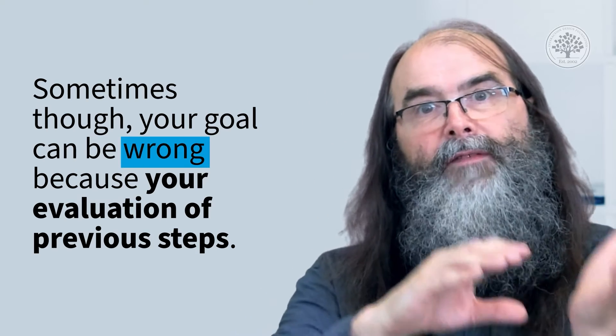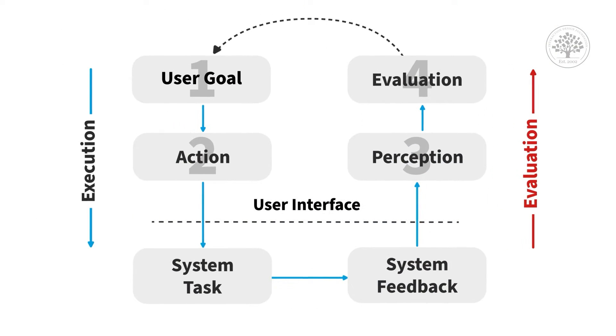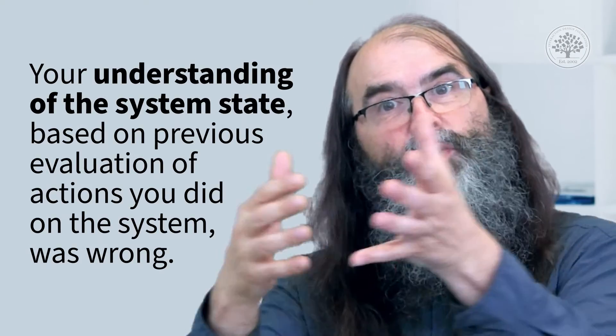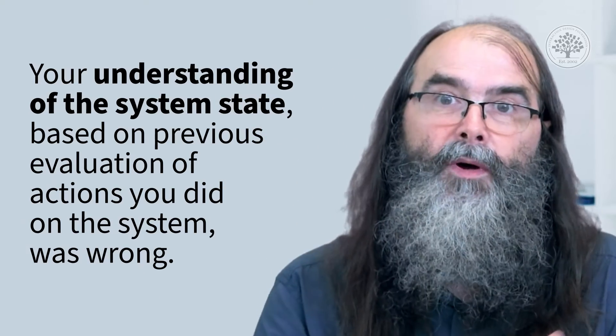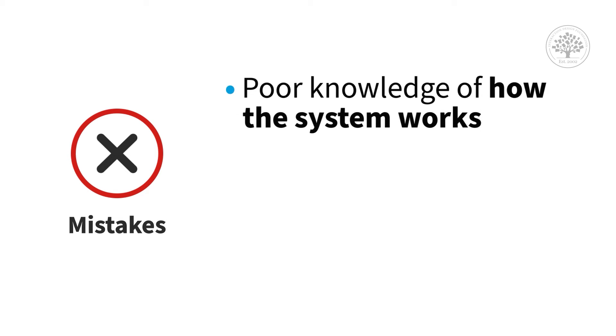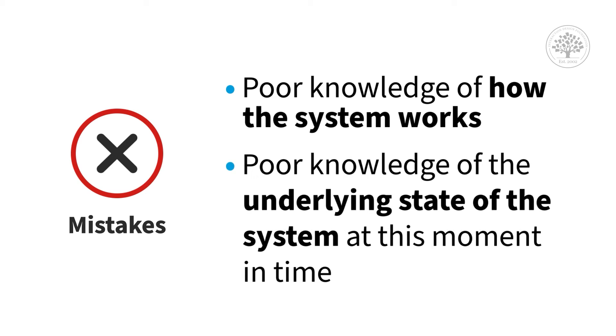Sometimes your goal can be wrong because of your evaluation of previous steps. For instance, you hit the archive button knowing exactly what it does, but then you realize the mail message you meant to archive is still there — because you thought a particular message was selected when actually a different one was. Your understanding of the system state, based on previous evaluation of your actions, was wrong. So mistakes can come from poor knowledge of how the system works, or from poor knowledge of the current state of the system.